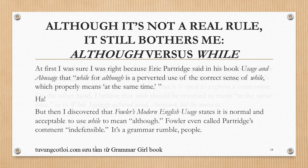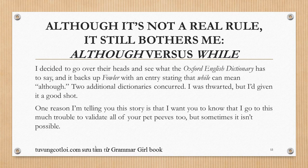At first I was sure I was right because Eric Partridge said in his book Usage and Abusage that using 'while' for 'although' is a perverted use of the correct sense of 'while.' But then I discovered that Fowler's Modern English Usage states it's normal and acceptable to use 'while' to mean 'although' — Fowler even called Partridge's comment indefensible. It's a grammar rumble! I went to the Oxford English Dictionary, which backs up Fowler with an entry stating that 'while' can mean 'although.' Two additional dictionaries concurred — I was thwarted.